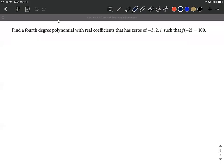Our goal here is to find a fourth degree polynomial with real coefficients that has these given zeros: negative three, positive two, and i. We also want to know that our function when you plug in negative two is going to equal 100.